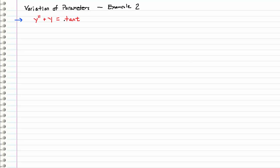Right away, notice that this non-homogeneous part is tangent of t, and there is no way that we could use undetermined coefficients for this because if we were to continually take derivatives of this, we would get secant squared and then only God knows whatever comes next. So we would be in trouble trying to use undetermined coefficients. Instead, we are going to use our more robust method of variation of parameters.